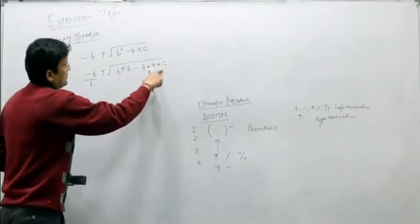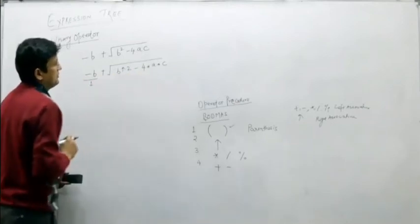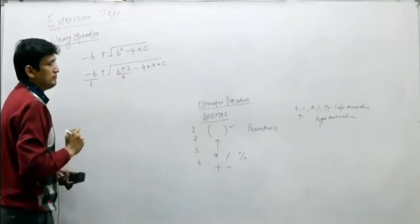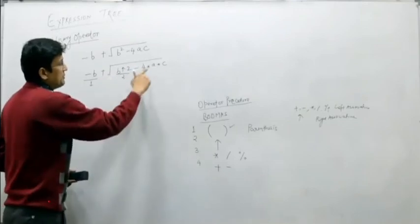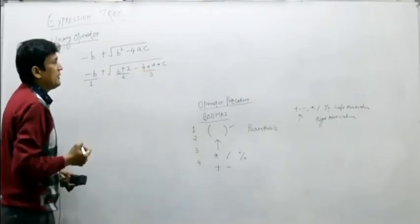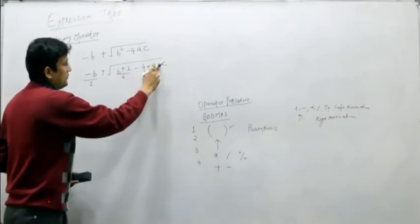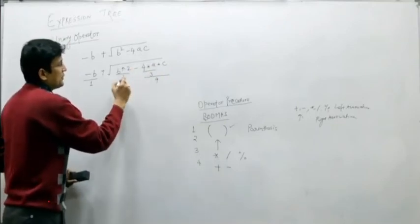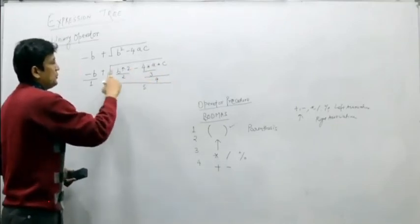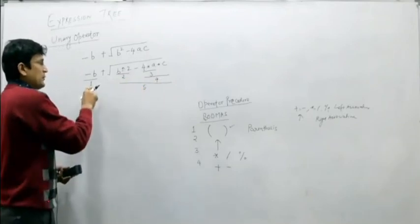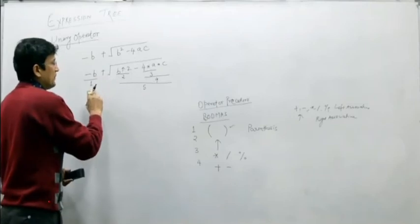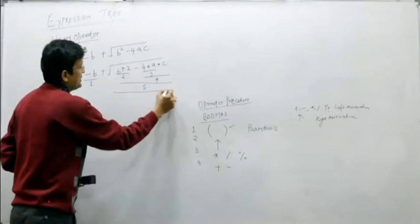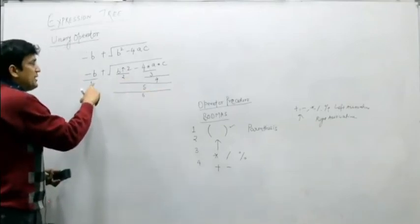Inside the under root, B raised to the power 2 is sub-expression 2. Then, among minus and multiplication, multiplication has higher precedence: 4 multiplied by A is sub-expression 3, and sub-expression 3 multiplied by C is sub-expression 4. Then sub-expression 2 minus sub-expression 4 is sub-expression 5. Under root of sub-expression 5 is sub-expression 6. The full expression becomes sub-expression 1 plus sub-expression 6.